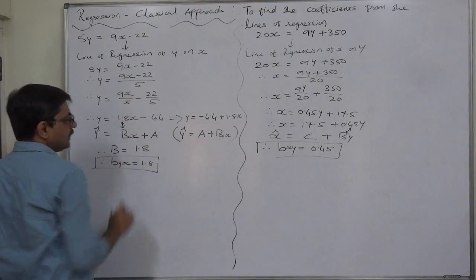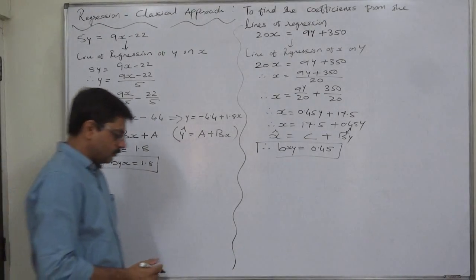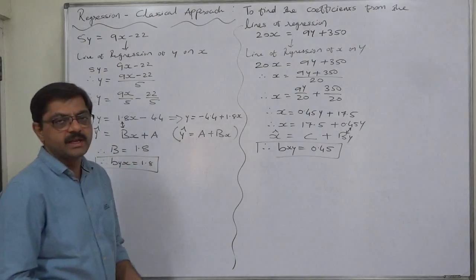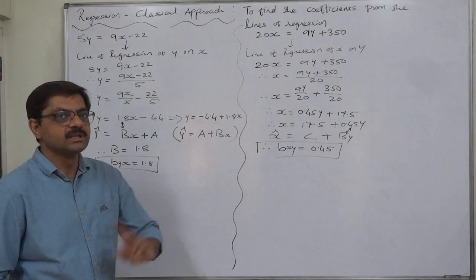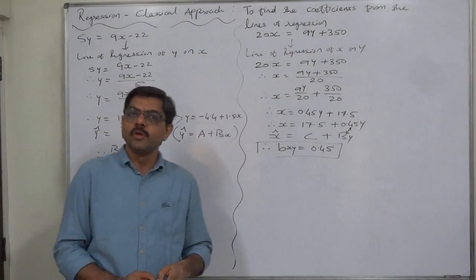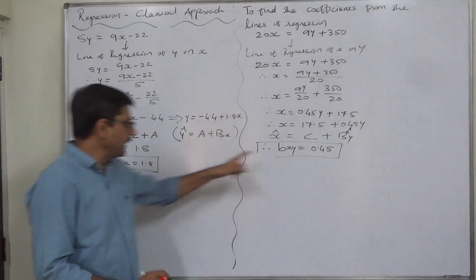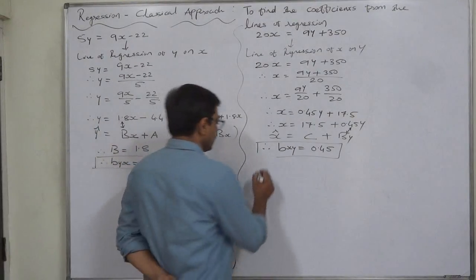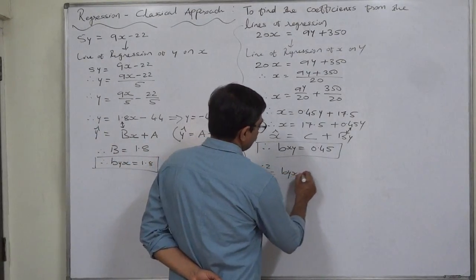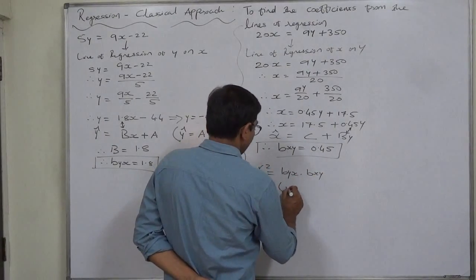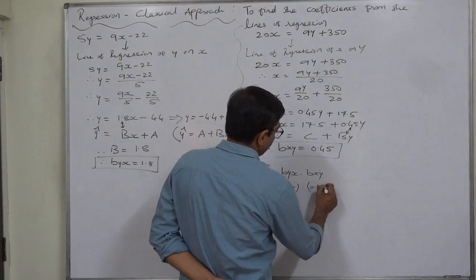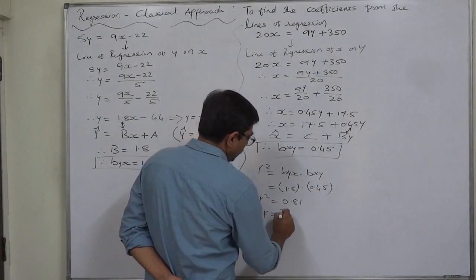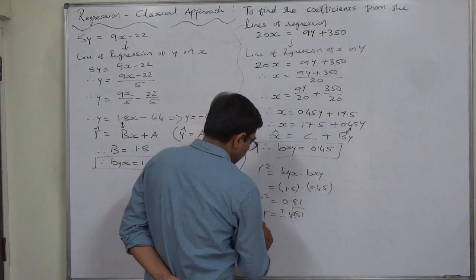Now we have both byx and bxy. An important property is that the coefficient of correlation is the geometric mean of the two coefficients of regression, meaning r² = byx × bxy = 1.8 × 0.45 = 0.81. Therefore r = ±√0.81.